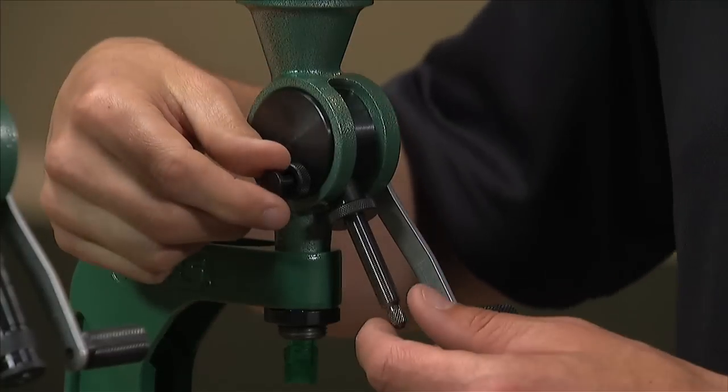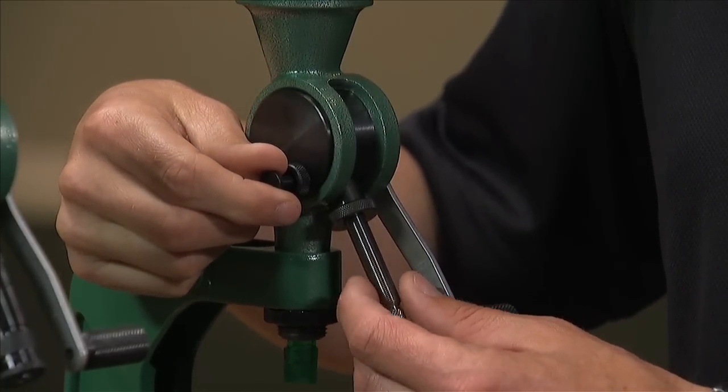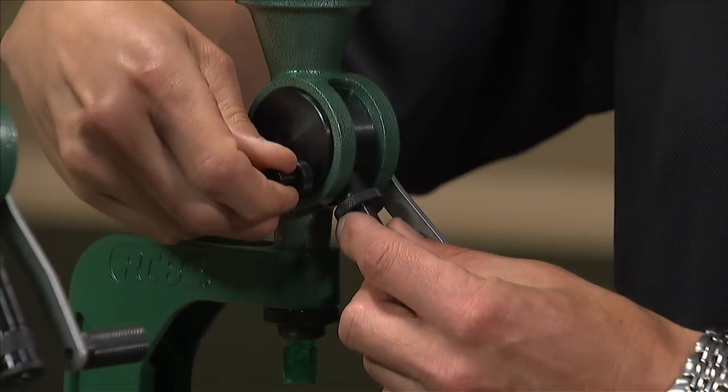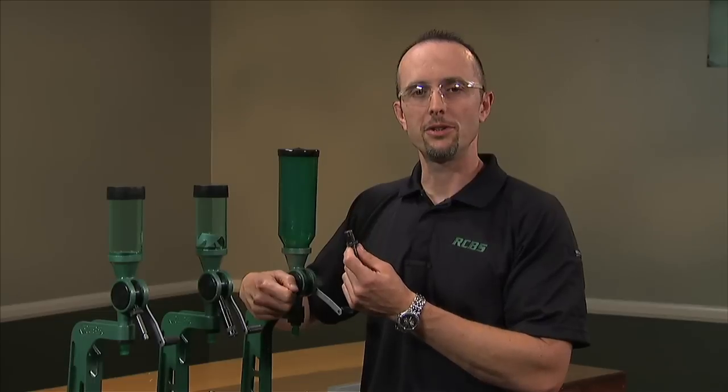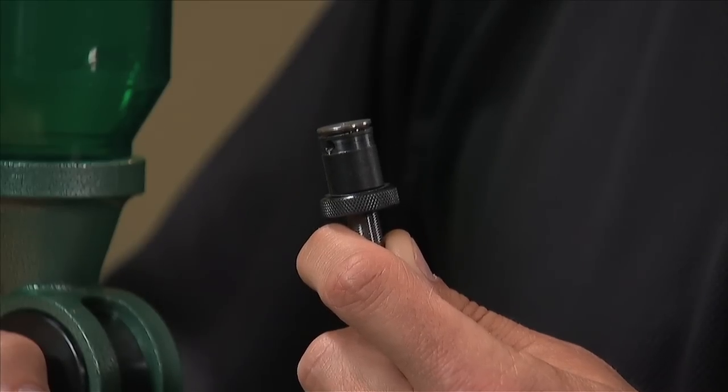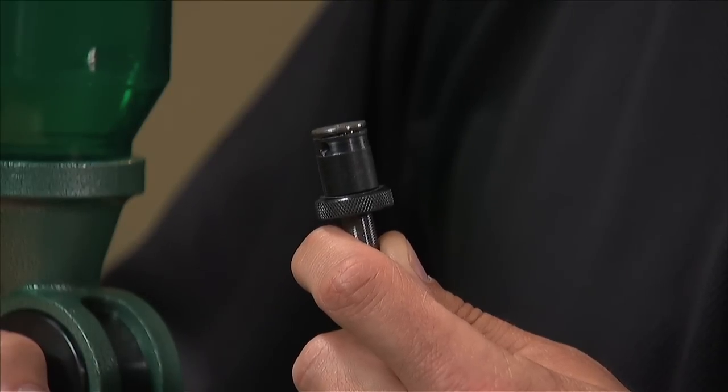Secondly, it contains a spring-loaded knob on the side of the cylinder that can be pulled for easy changing of your metering screw assembly. This allows you to have multiple metering screw assemblies pre-set for your individual loads.